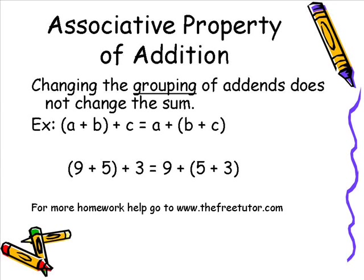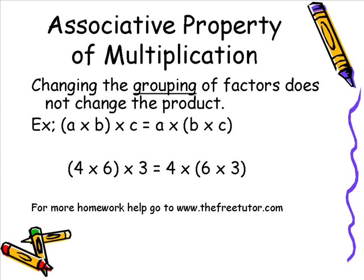Likewise, the associative property of multiplication says changing the grouping of factors does not change the product. In algebra: (A times B) times C equals A times (B times C). With numbers: (4 times 6) times 3 equals 4 times (6 times 3). The only thing that changed was the grouping — both sides of the equation equal 72. So when you think associative property, think grouping. Associative property deals with grouping.